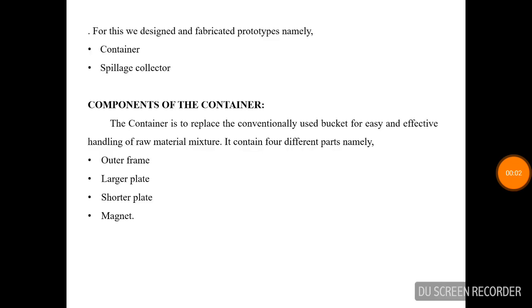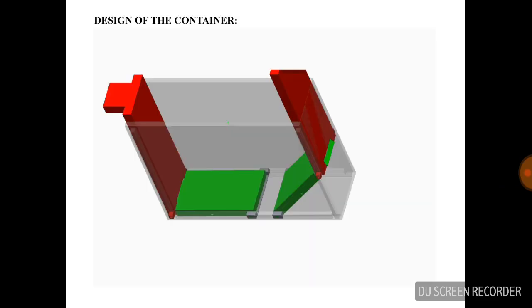For this, we designed and fabricated two prototypes: a container and a spillage collector. The container replaces the conventional bucket for easy and effective handling of raw material. It contains four parts: outer frame, larger plate, shorter plate, and magnet. This diagram shows the design of the container. The green color shows the shorter plate and the red color represents the longer plate. The outer frame contains grooves on both vertical and horizontal directions. The longer plate is placed on the vertical groove, the shorter plate moves on the horizontal groove, and the magnet is placed on the bottom of the shorter plate to ensure the closeness of the shorter plate.